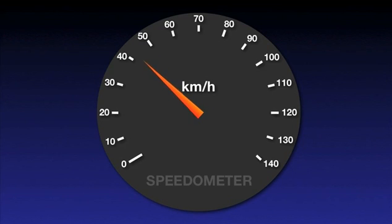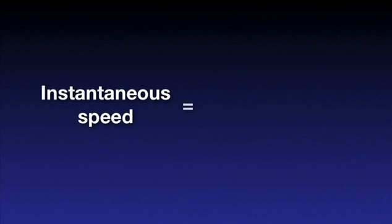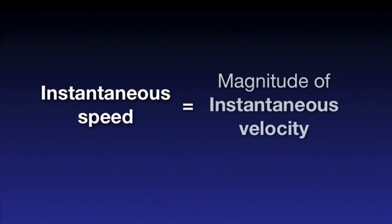We can tell the instantaneous speed of a car by looking at its speedometer. Instantaneous speed is simply the magnitude of instantaneous velocity. The reason is that when a very short time interval is considered, the distance travelled is equal to the size of the displacement.